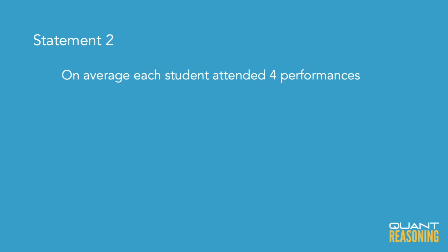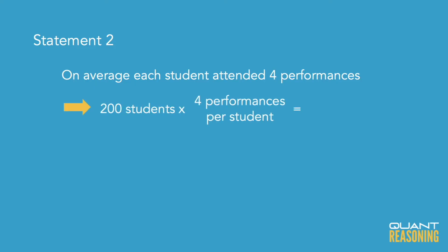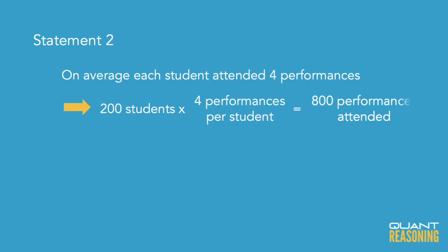Statement 2 gives us an average — not the one the question asked for, but the other side of the coin. It tells us that on average each student attended four performances, whereas we want to know on average how many students attended each performance. But if we know there are 200 students and each attended four performances on average, that means there were in total 800 attendances.